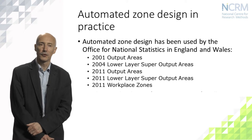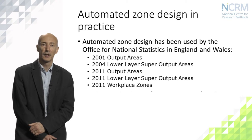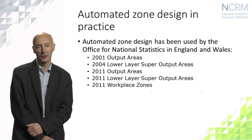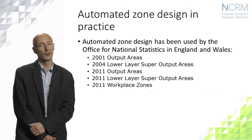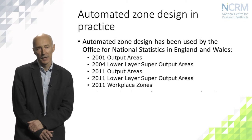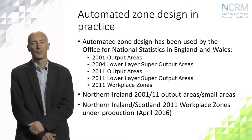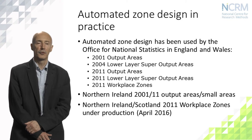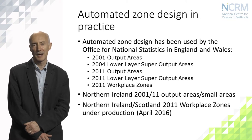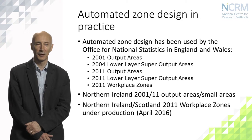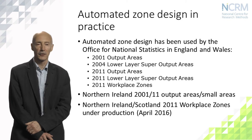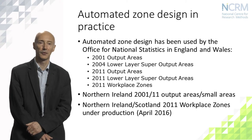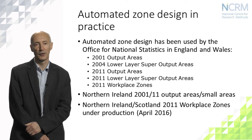The whole system was revised for the 2011 census to produce output areas and an updated set of lower layer super output areas, and then a completely new geography for 2011 known as workplace zones. Those are all available covering England and Wales. The same approach was used to create the Northern Ireland 2001 output areas and 2011 small areas. At April 2016, the time of recording, we're shortly expecting the publication of a set of UK-wide workplace zones, including Scotland, Ireland, and Northern Ireland, which have been in production over the last few months.